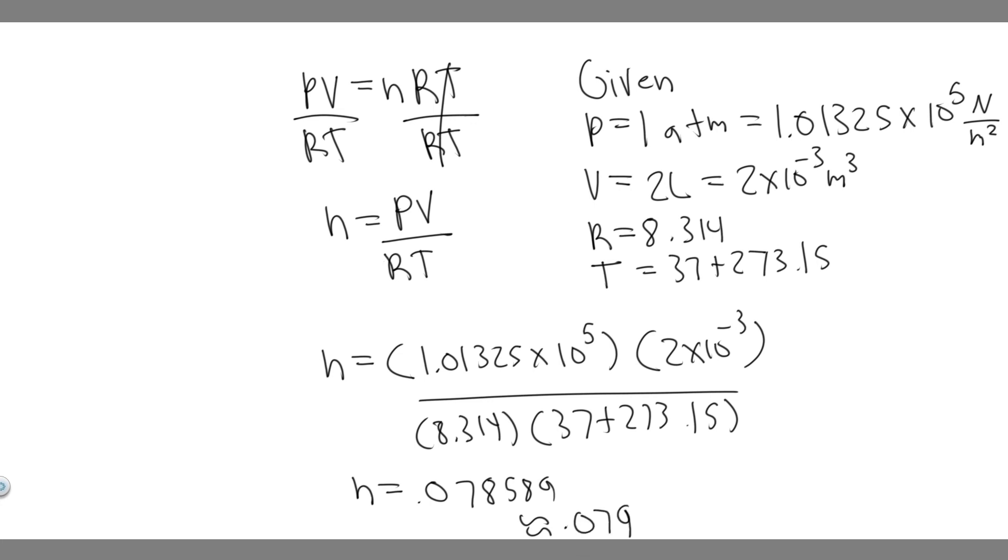You can round however you want, though. So I'm just going to say 0.079 moles. So this is going to be your answer rounded. So 0.079 moles is going to be how many is in basically the lungs of an average person. So this is your answer and hopefully you found this useful.